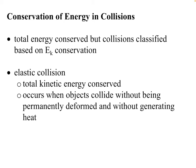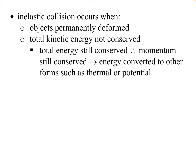An elastic collision occurs when objects collide but are not permanently deformed and no heat is generated. This actually happens a lot at the atomic level, where things are so small they don't generate heat or experience friction. We don't see elastic collisions much on a larger scale — the main way to get them is using frictionless surfaces like an air table.